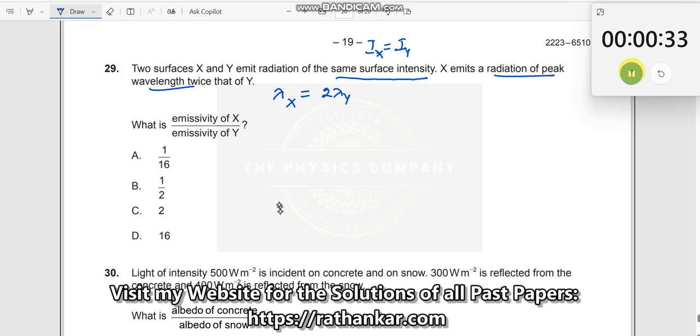What is emissivity is given. So towards it, what we will do is, since ix equal to iy, I can now write ix is equal to ex sigma t power 4. You can ask me, where is this a here?